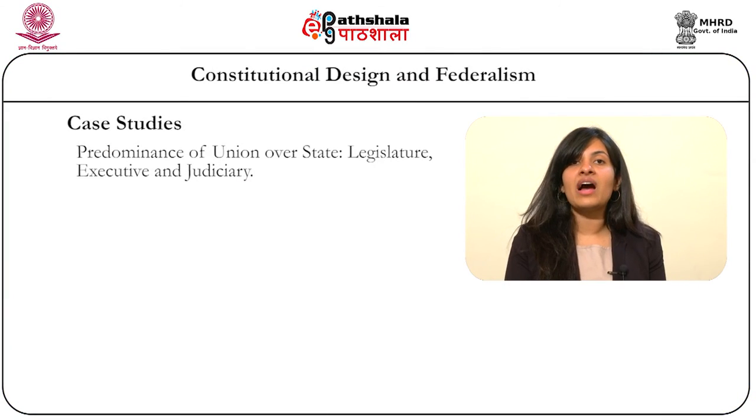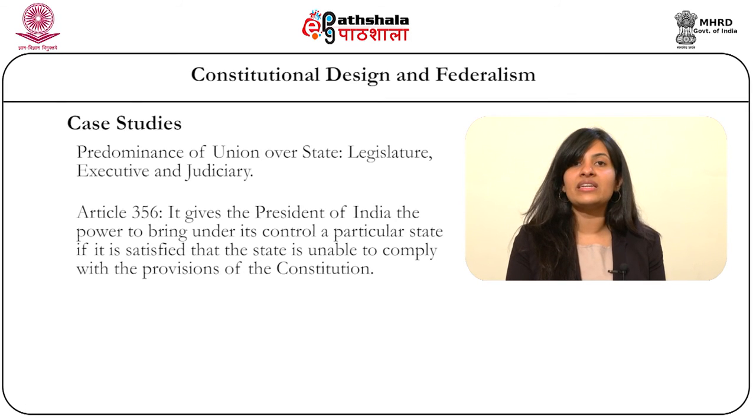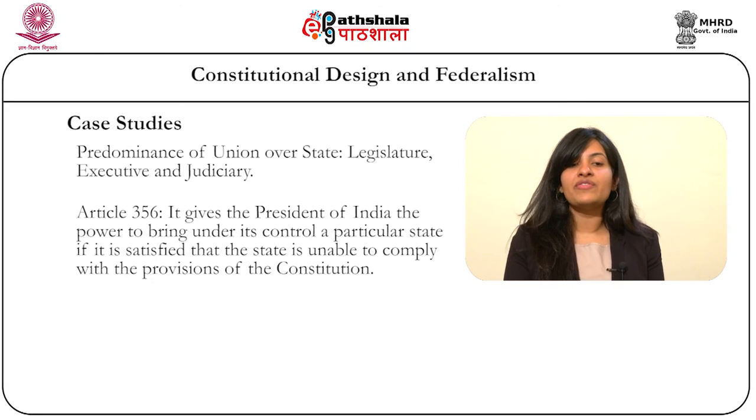However, post-liberalisation, India's federal structure can be described as cooperative come competitive, owing itself to regional political parties whose agenda include consolidating interests based on economic, minority, religious and caste rights. As per the Indian constitution, the union is required to protect every state against external aggression as well as from internal disturbance. It is interesting to note that Article 356 of the constitution virtually negates India's federal character. It gives the union executive, the President of India, the power to bring under its control a particular state, if it is satisfied that the state is unable to comply with the provisions of the constitution.